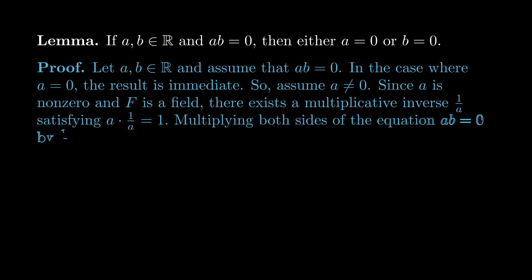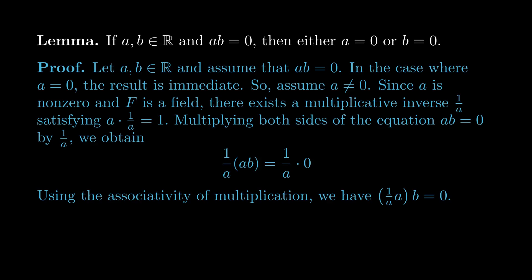Multiplying both sides of the equation ab = 0 by this 1/a, we obtain this equation. Using the associativity of multiplication, we can regroup the terms, first multiplying the 1/a by a. And since (1/a) × a = 1, it follows that 1 × b = 0, which implies b = 0. This completes the proof.